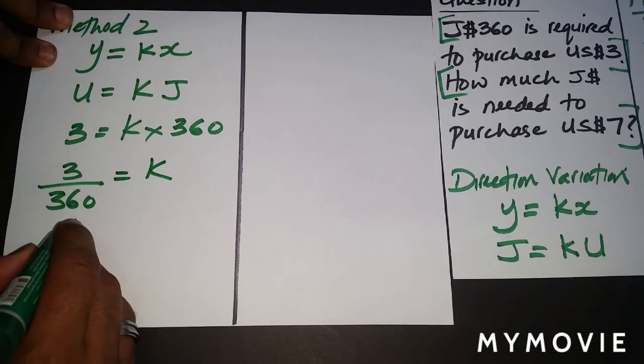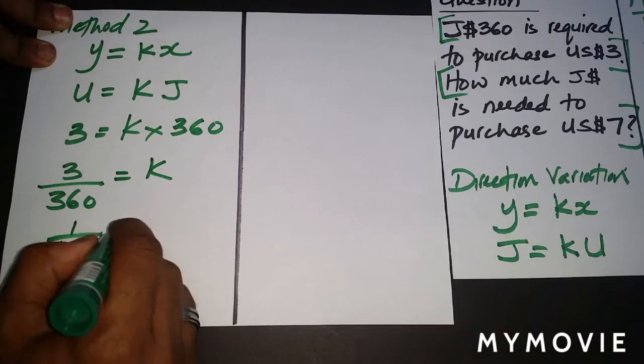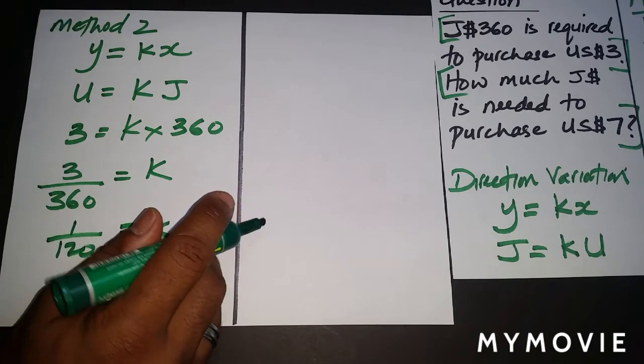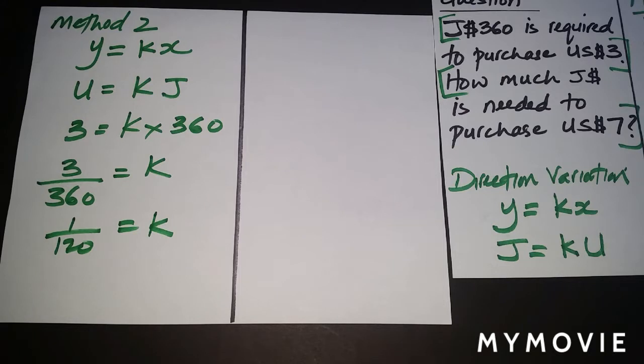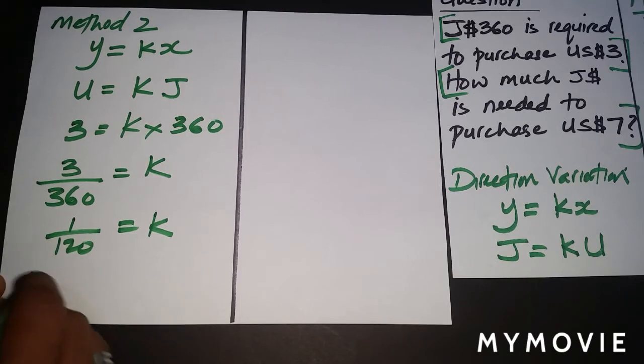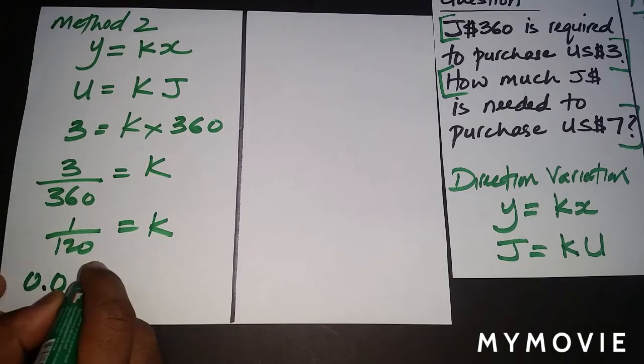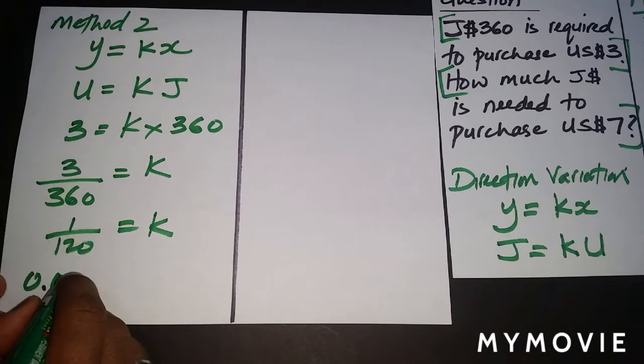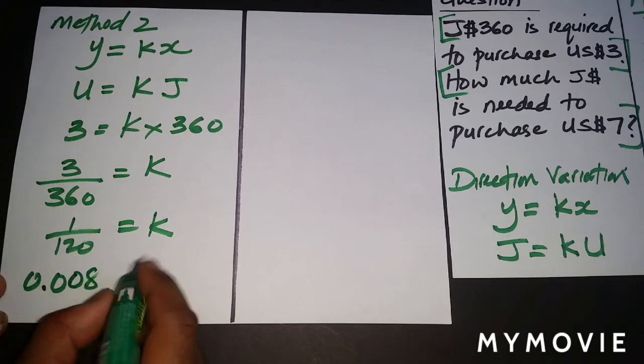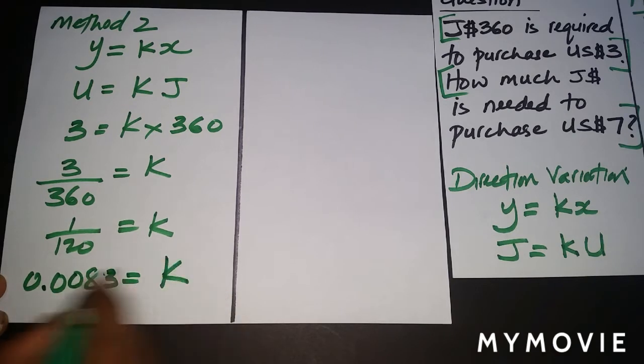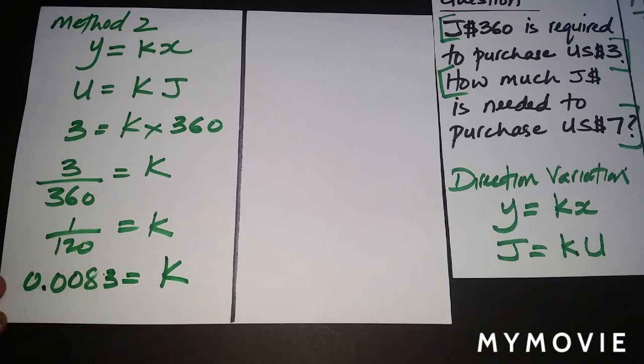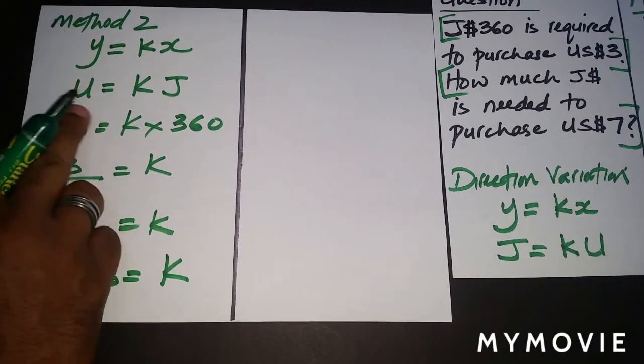That's actually going to be 1 over 120, which is equal to K. Now we can keep this or we can find the decimal of it. So 1 divided by 120, that seems to be 0.0083. That would be it, rounded about that figure, and we can stop here.